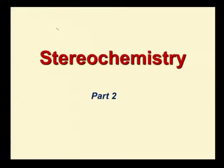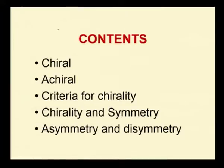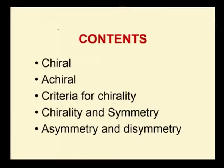Welcome to the UGC lecture series on Polymer Science. In today's lecture, we will be discussing part two of stereochemistry, covering: what is chiral, what is achiral, the difference between chiral and achiral, criteria for chirality, how symmetry and chirality play a role in stereochemistry, what is asymmetry and disymmetry, what is a stereogenic centre and non-stereogenic centre, and finally, enantiomers and diastereomers.